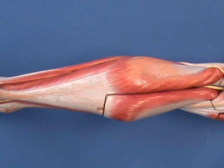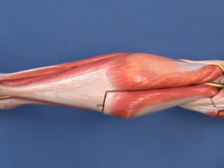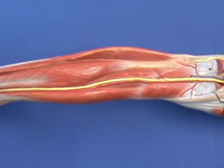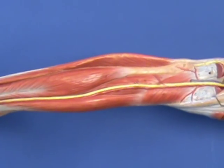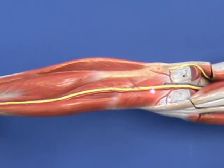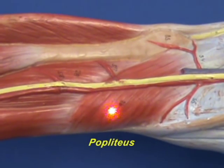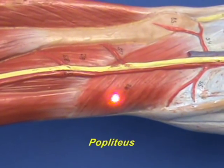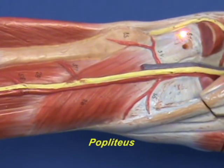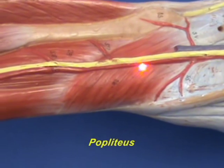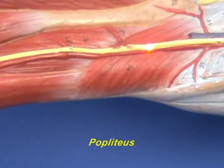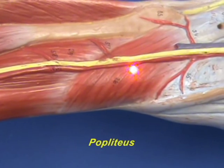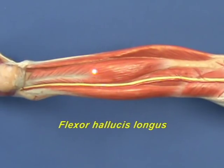We will now look at the deep muscles of the posterior compartment. We will be able to see these better if we remove the gastrocnemius and the soleus muscles. The first deep muscle of the posterior compartment is the popliteus muscle. The popliteus has an origin on the posterior surface of the proximal tibia and inserts on the lateral femoral condyle. Its action is to unlock the extended knee by laterally rotating the femur on the fixed tibia at the initiation of flexion.